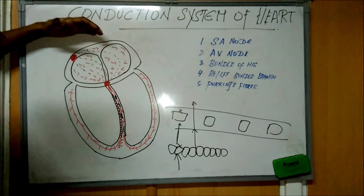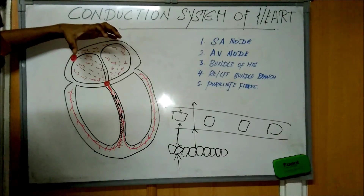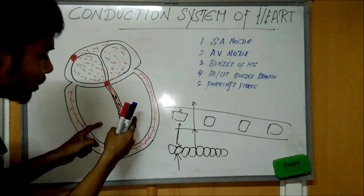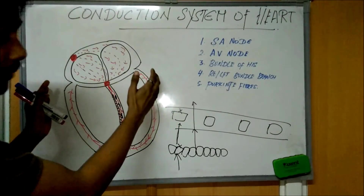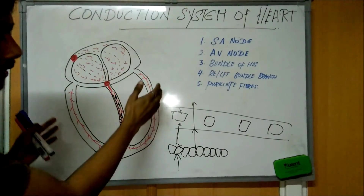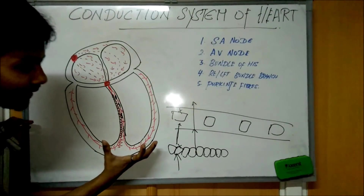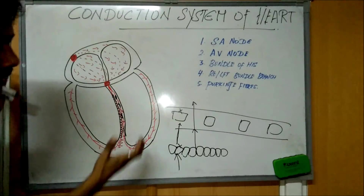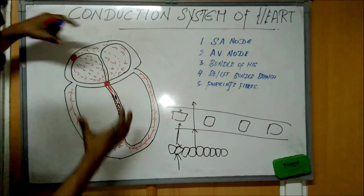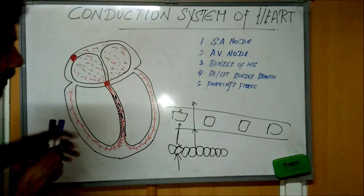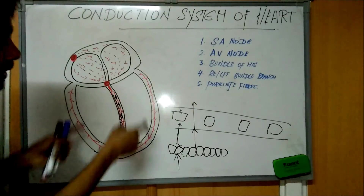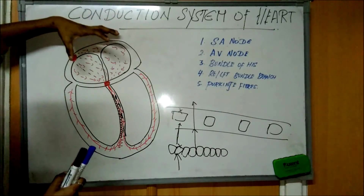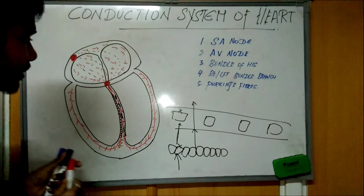From the SA node, the auricles contract and the blood present in the atria is pushed out. The cells in the ventricle then contract the ventricle. From the right side, blood goes to the lungs, and from the left side, it goes to the peripheral areas. So the auricle contracts first, followed by the ventricle contracting.